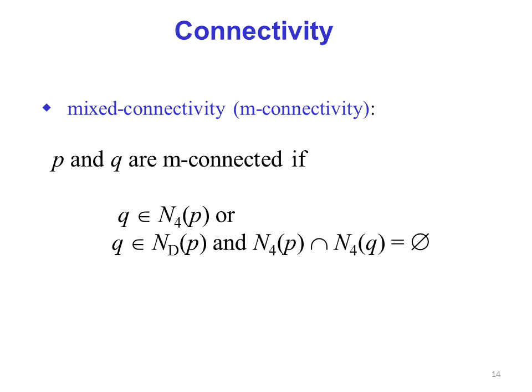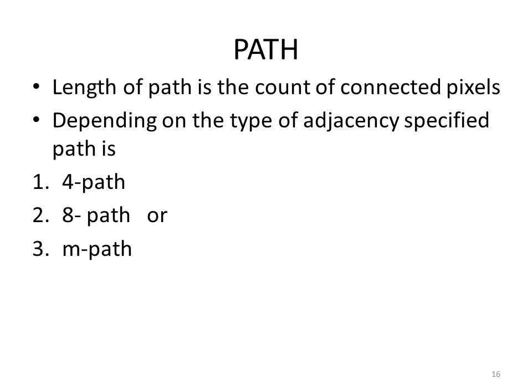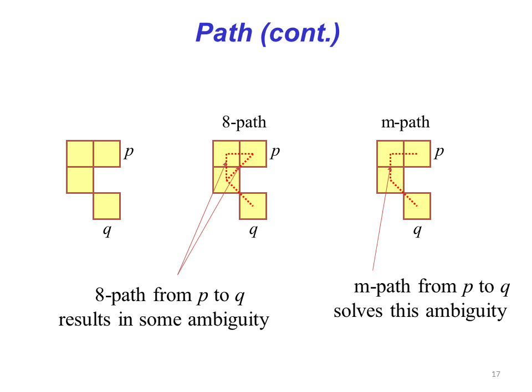Moving towards the concept of path. A path from pixel p to pixel q is a sequence of distinct pixels. We can define a type of path - either 4-path, 8-path, or m-path - depending on the type of adjacency. Length of path is the count of connected pixels. Depending on the type of adjacency specified, the path could be 4-path, 8-path, or m-path.